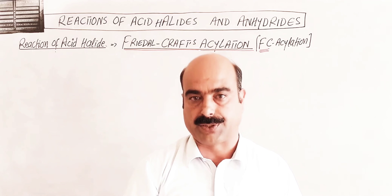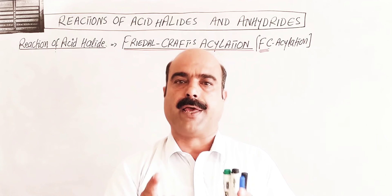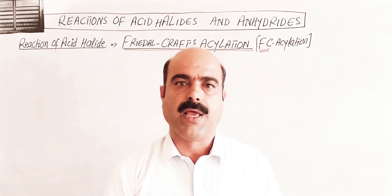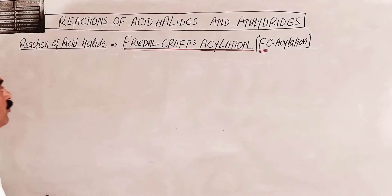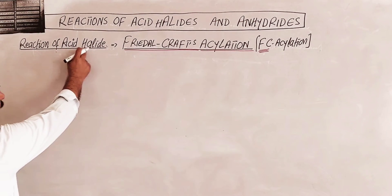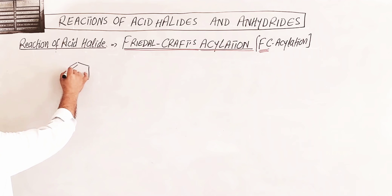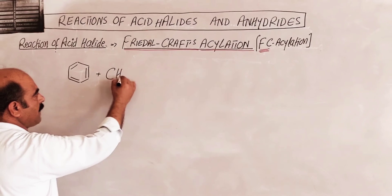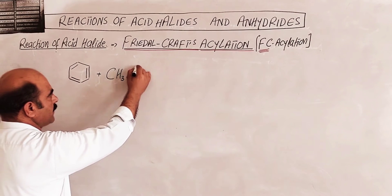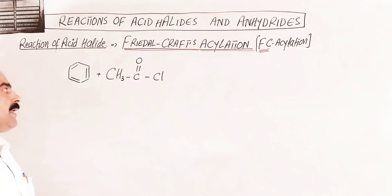We will discuss the reactivity of benzene and the preparation of aromatic ketones using acyl halides. The reaction is benzene plus acyl halide — for example, CH3-CO-Cl (acetyl chloride). These reactions use a catalyst.